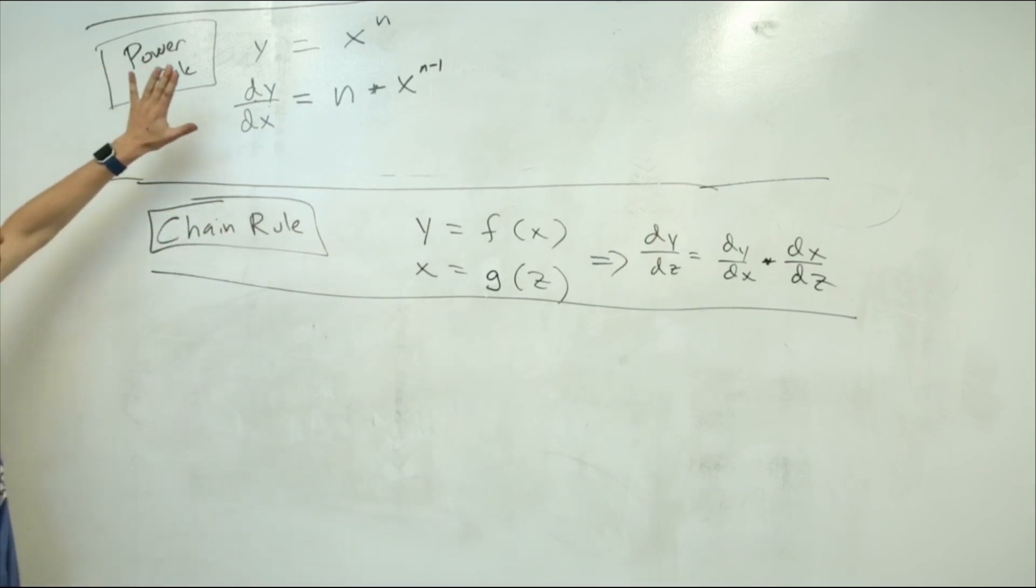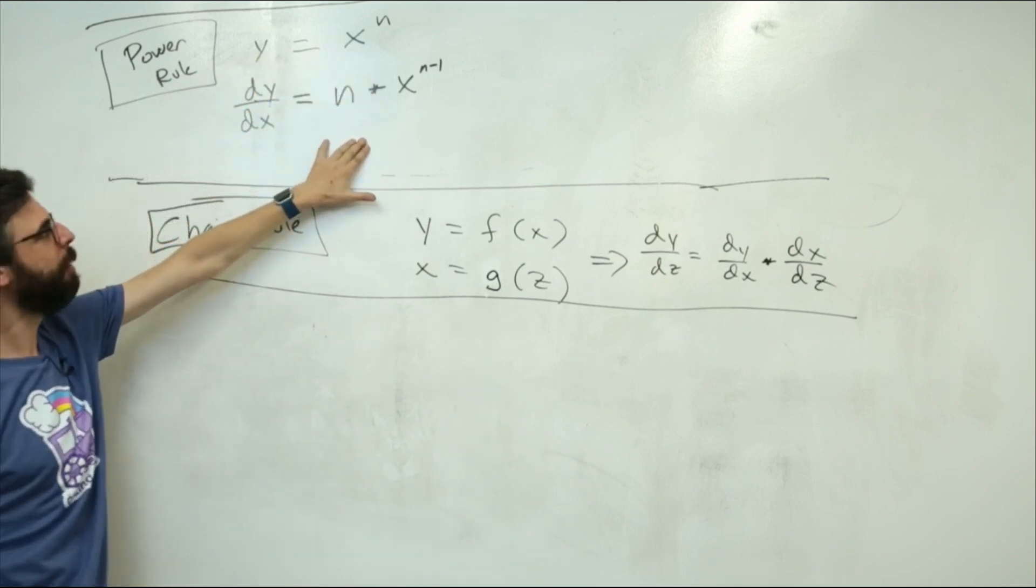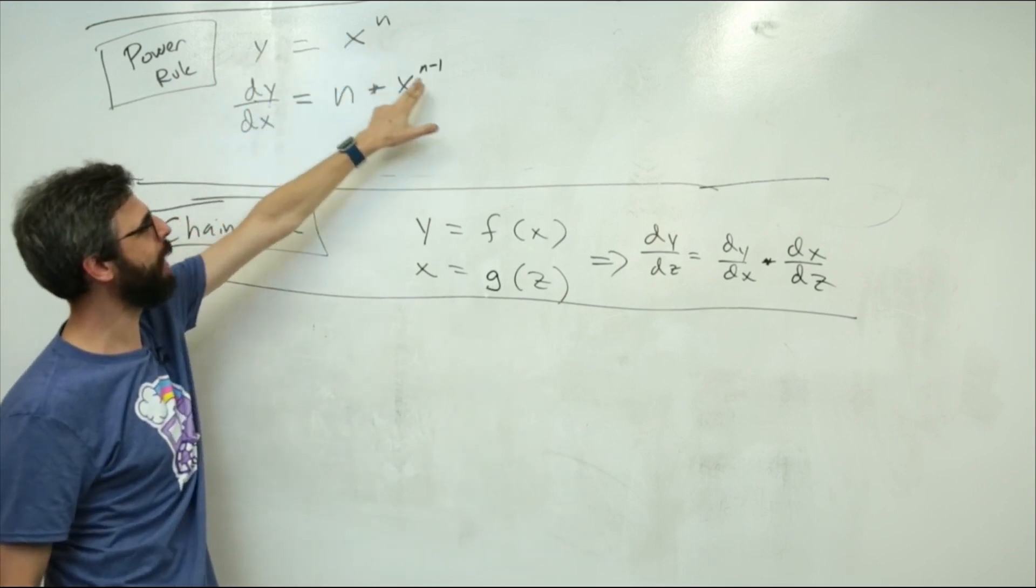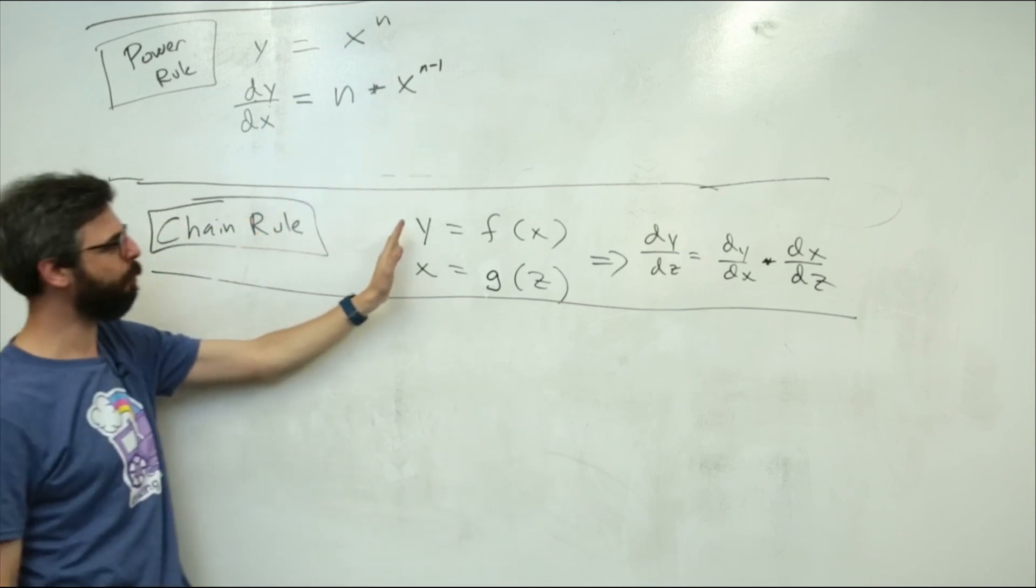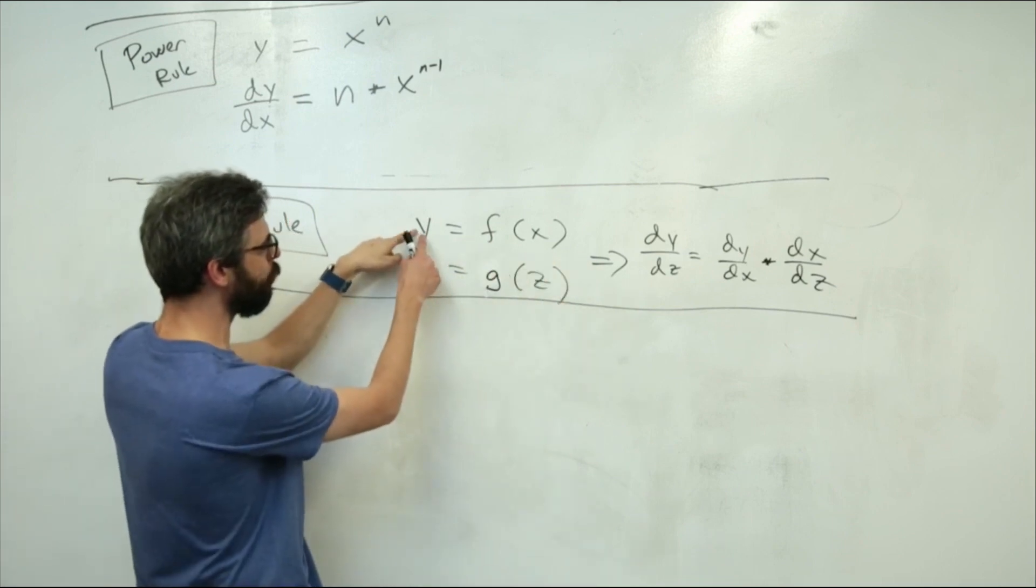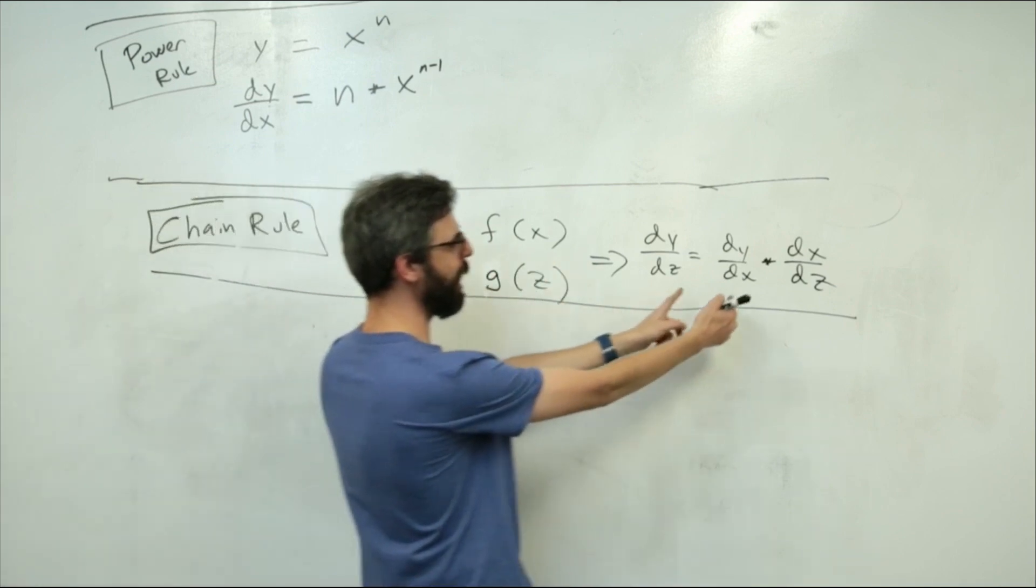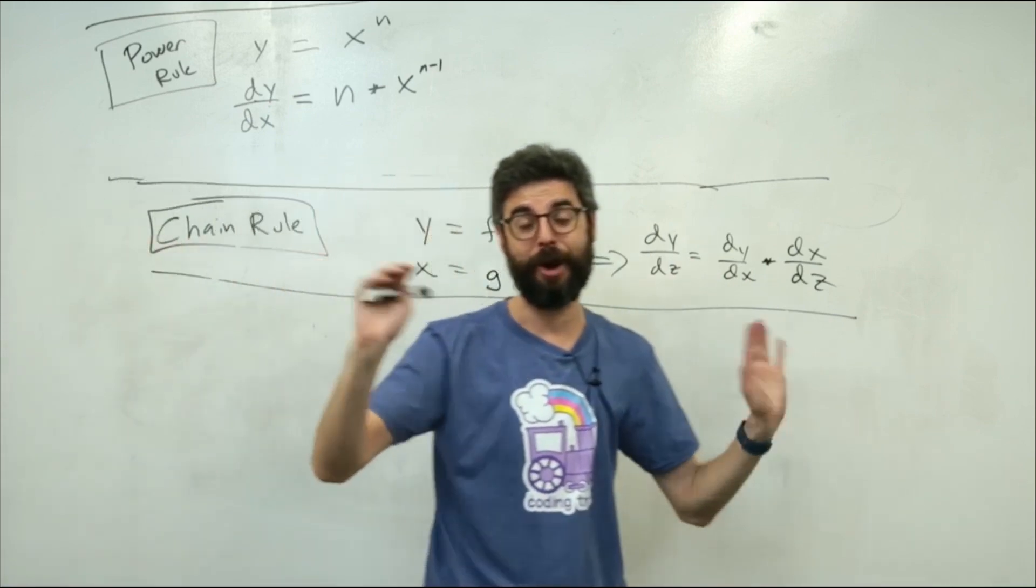I've summarized how the power rule is a way to take a function and compute the derivative by taking the exponent, multiplying it, and subtracting one by the exponent. The chain rule is a way to say if y depends on x and x depends on z, I can look at the relationship between y and z by chaining the two derivatives of this function and this function. So those are the two pieces that I've done so far.